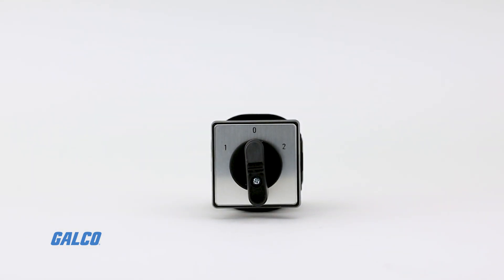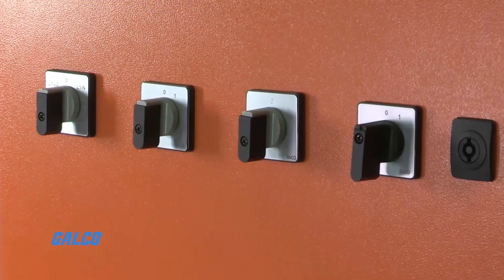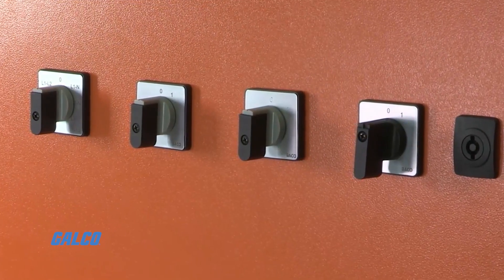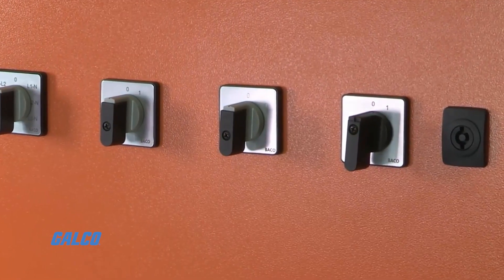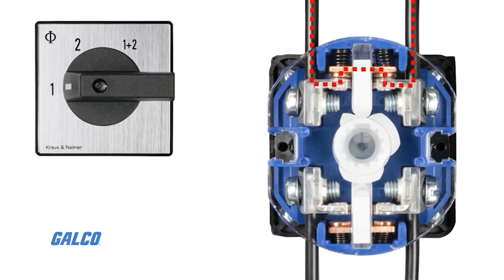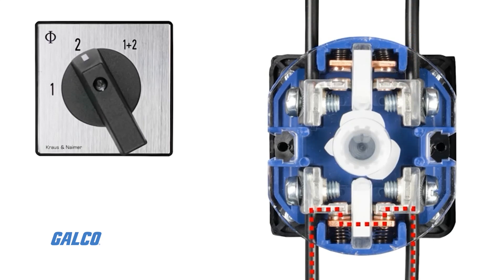To better understand what a cam switch is, we must first know what a cam itself does. A cam is a rotating or sliding piece in a mechanical linkage used to convert rotary motion into linear motion. The irregular or unique shape of a cam imparts motion on an object that tracks the cam's movement.